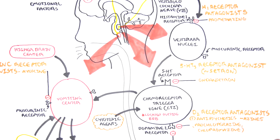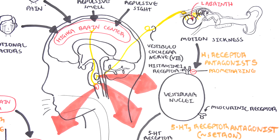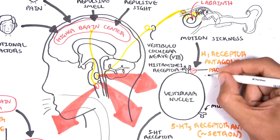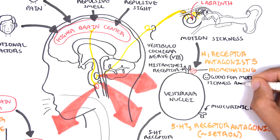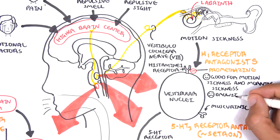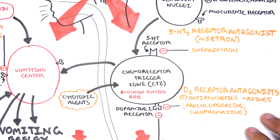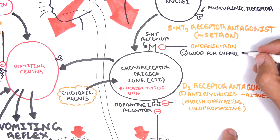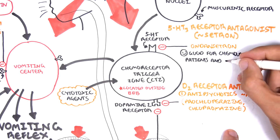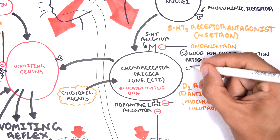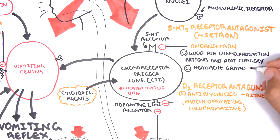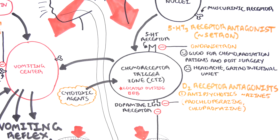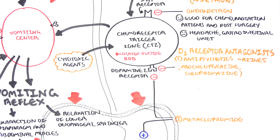Looking at each antiemetic class in more detail: histamine 1 receptor antagonists such as promethazine are good for motion sickness and morning sickness. Side effects include drowsiness and sedation. Serotonin receptor antagonists ending in '-setron,' such as ondansetron, are good antiemetics for patients undergoing chemotherapy or radiation, and also for post-surgical patients. Side effects include headache and gastrointestinal upset. Remember these drugs can also work locally at the gastrointestinal tract.